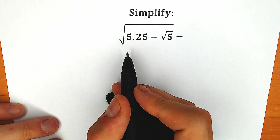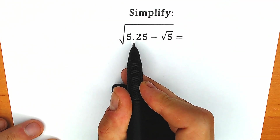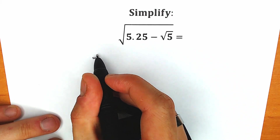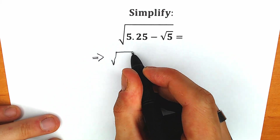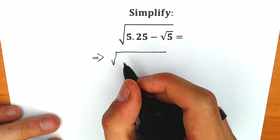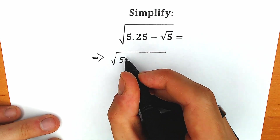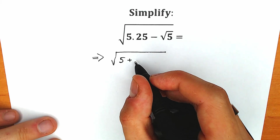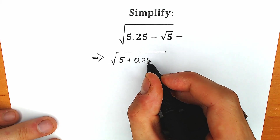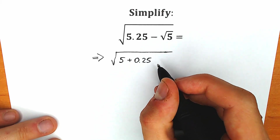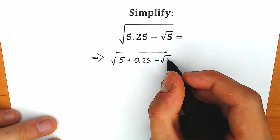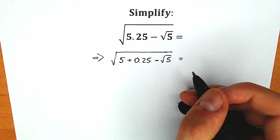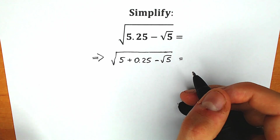So what we're going to do first: let's split 5.25 as 5 plus 0.25. So let's start with that. Our first step — instead of 5.25, let's write 5 plus 0.25, and minus square root of 5. Don't forget about it — minus square root of 5. I really hope you understand this first step.